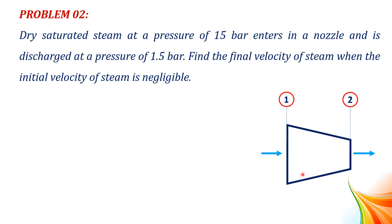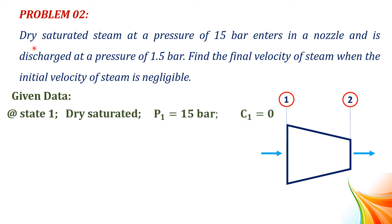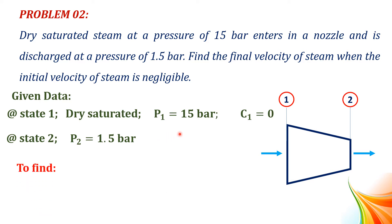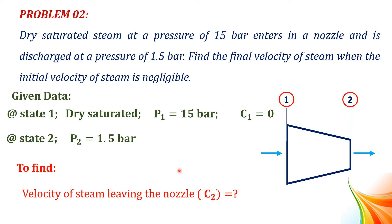This is a convergent nozzle. Point 1 is the inlet and point 2 is the outlet — steam enters through 1 and leaves at 2. Given data: the steam is initially dry saturated at a pressure P1 equal to 15 bar, and is discharged to a pressure P2 equal to 1.5 bar. We need to find the exit velocity C2. The initial velocity C1 is negligible, therefore C1 equal to 0.